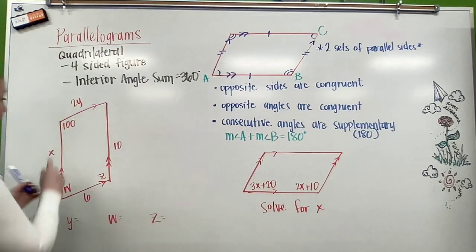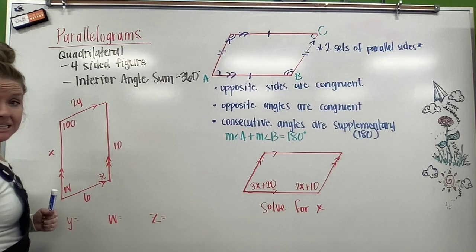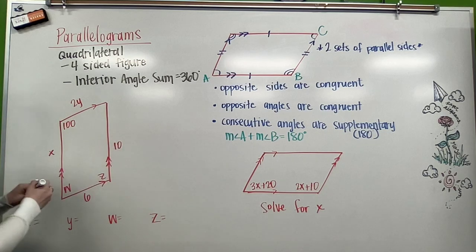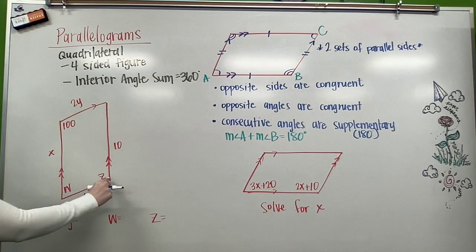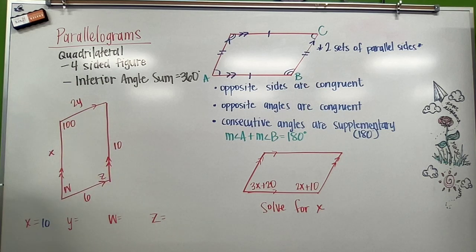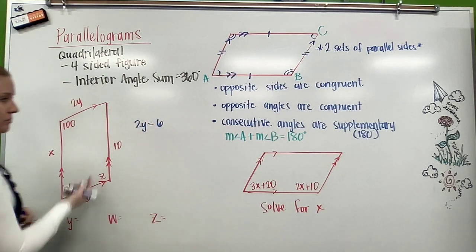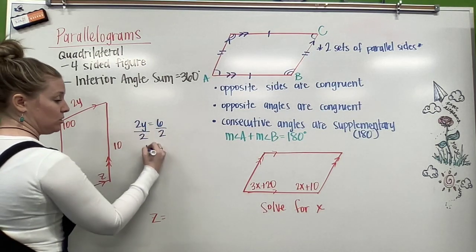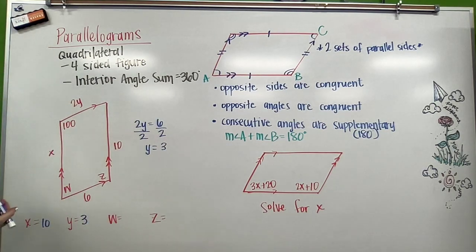So over here, I have an example. I've got four unknowns: X, Y, W, and Z. If we check this out, here are my opposite sides. So I know that X equals 10. Opposite sides have to be congruent because we have a parallelogram. Opposite sides are parallel, so opposite sides are congruent. To solve for Y, I have 2Y and it is equal to 6. Opposite sides are congruent, so I can set 2Y equal to 6, divide by 2, and I get Y equals 3.